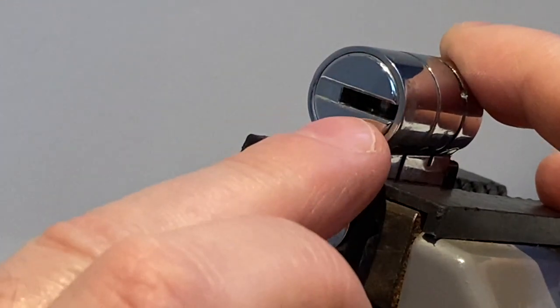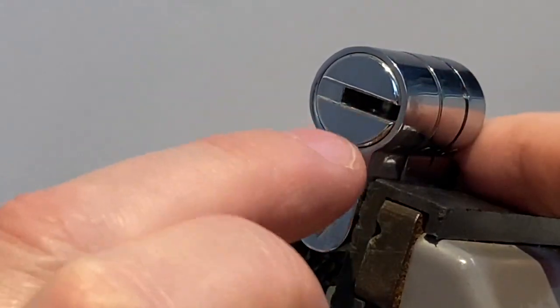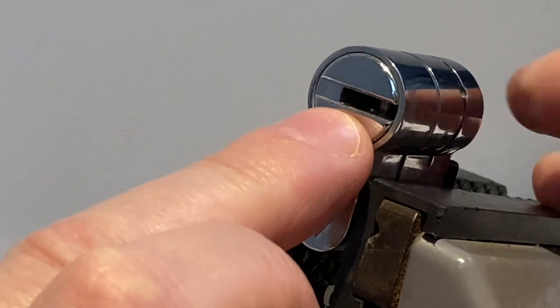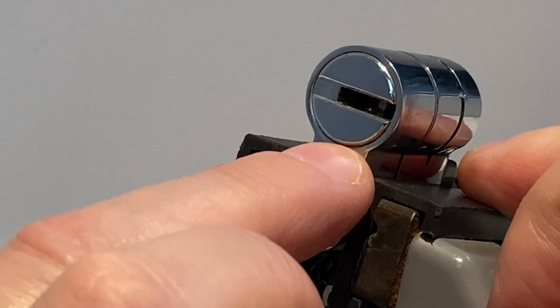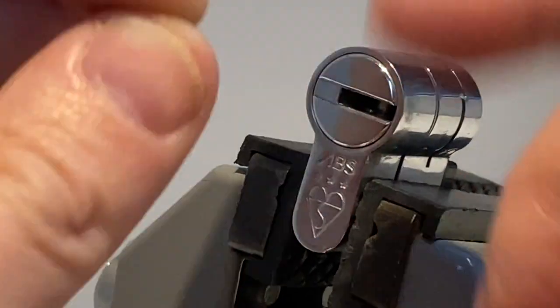Now there are two methods apparently to defeat the magnetic pin. The first appears to be the Bosnian Bill method where you flip the lock upside down.